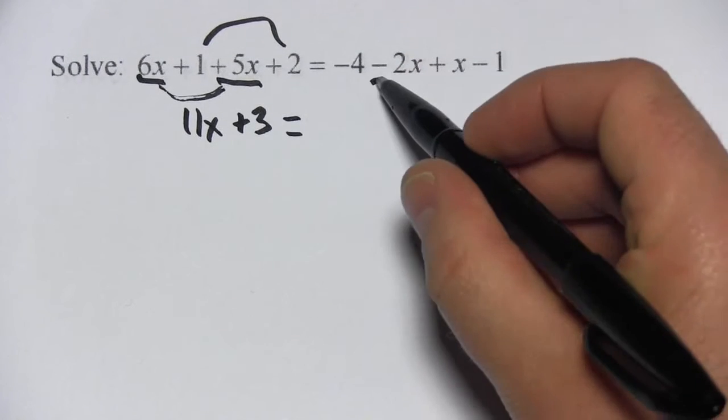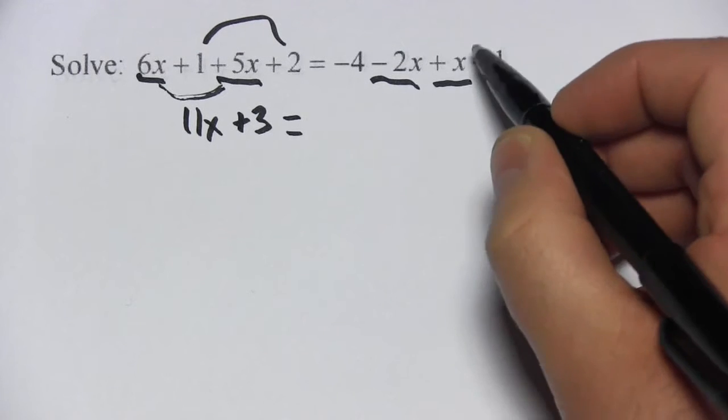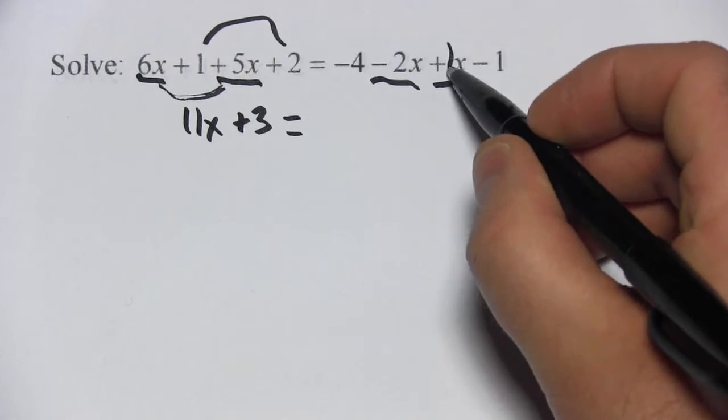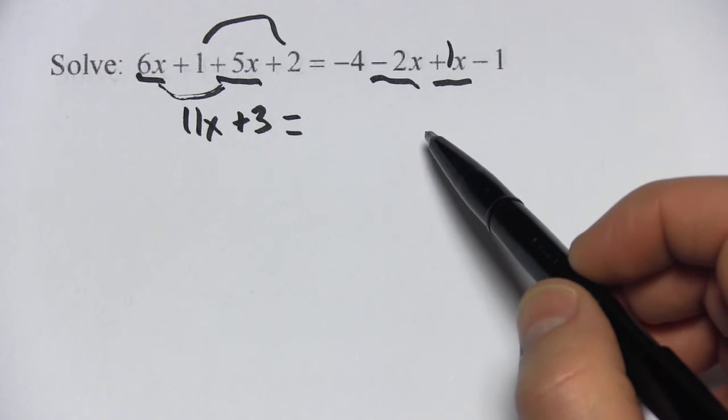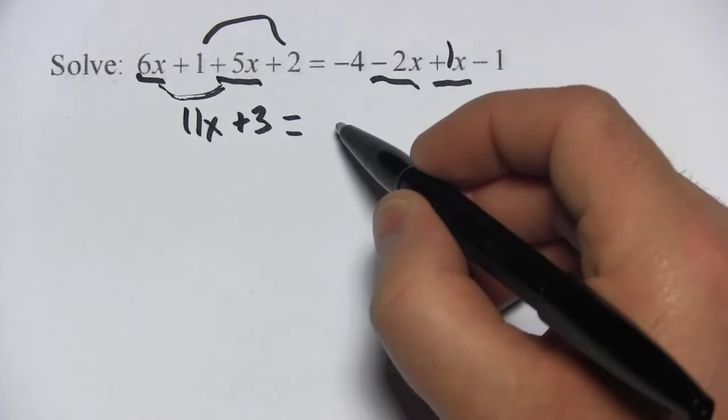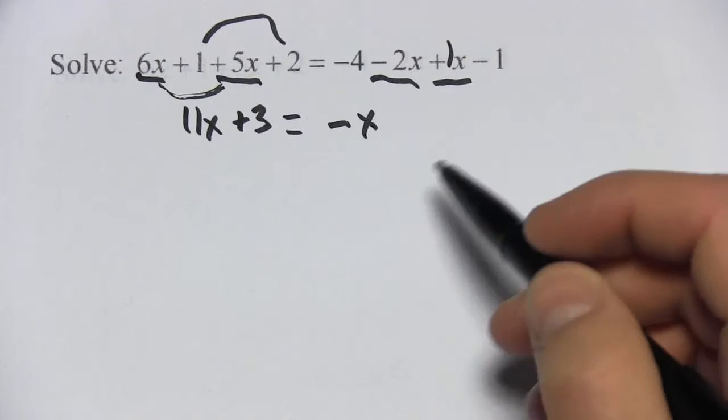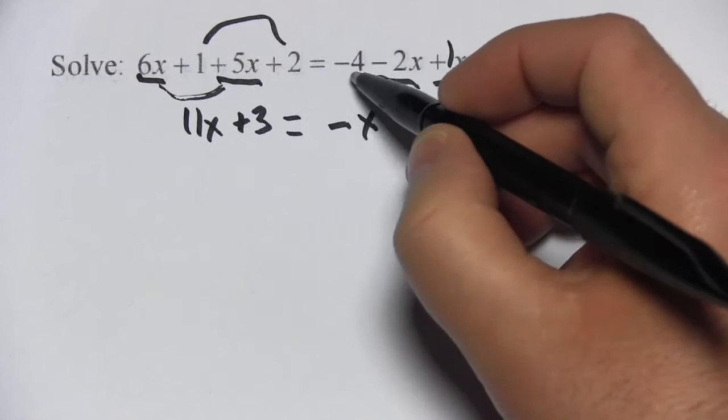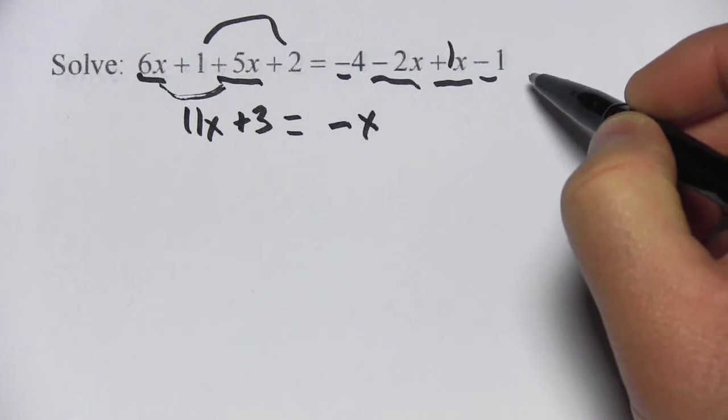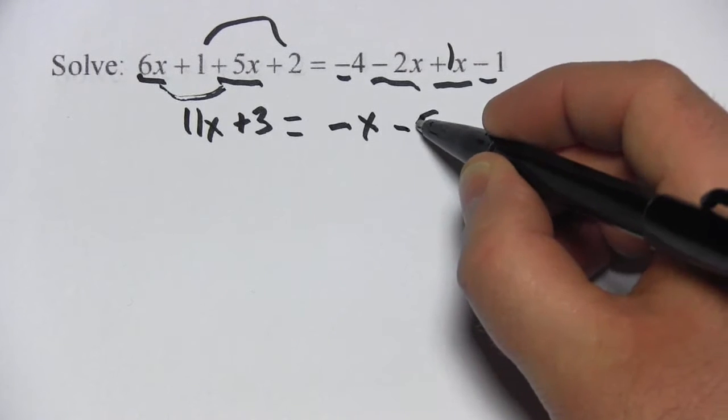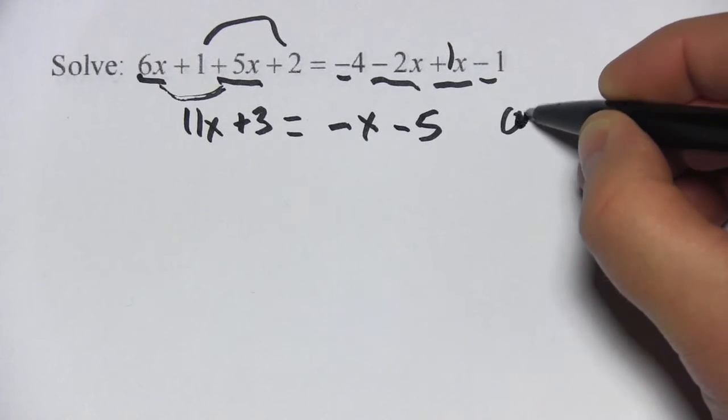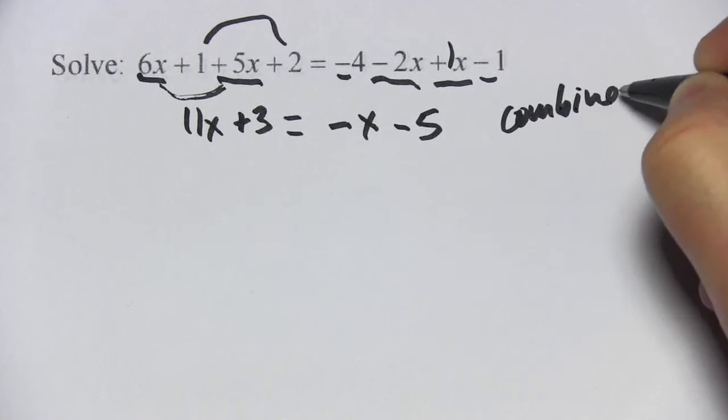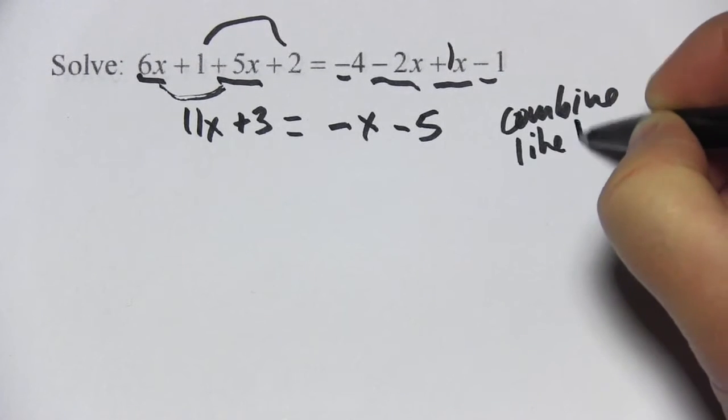Let's do the same over here. We have a negative 2x and a positive x. You should think of this as a 1x, so negative 2 plus 1, that's a negative 1x. I'm going to write this just as a negative x. And then we also have the negative 4 and the negative 1, that adds up to a negative 5. So the first step was just to combine like terms.